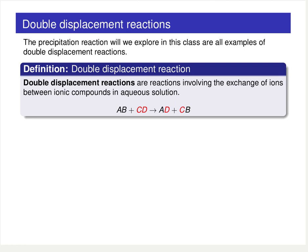Double displacement reactions follow a general scheme where you basically exchange ions. In the example, you have A, B and C, D — the A ends up pairing up with D, and the B ends up pairing up with C to get the products AD and CB. So basically it's an exchange process.